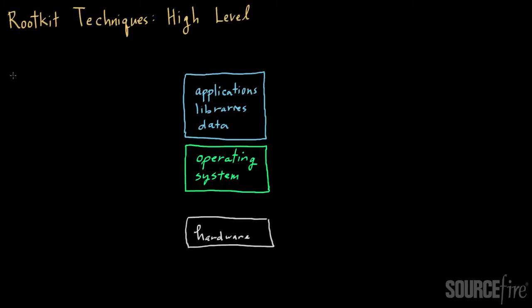So how does it typically work? A typical computer system has multiple layers of execution. At the highest level you have what's called user space. User space is where typical applications run — for example, a word processing program or a web browser. These are things you physically see and interact with. A typical application in user space may use one or more libraries, which are common components of code that applications share, along with associated data.